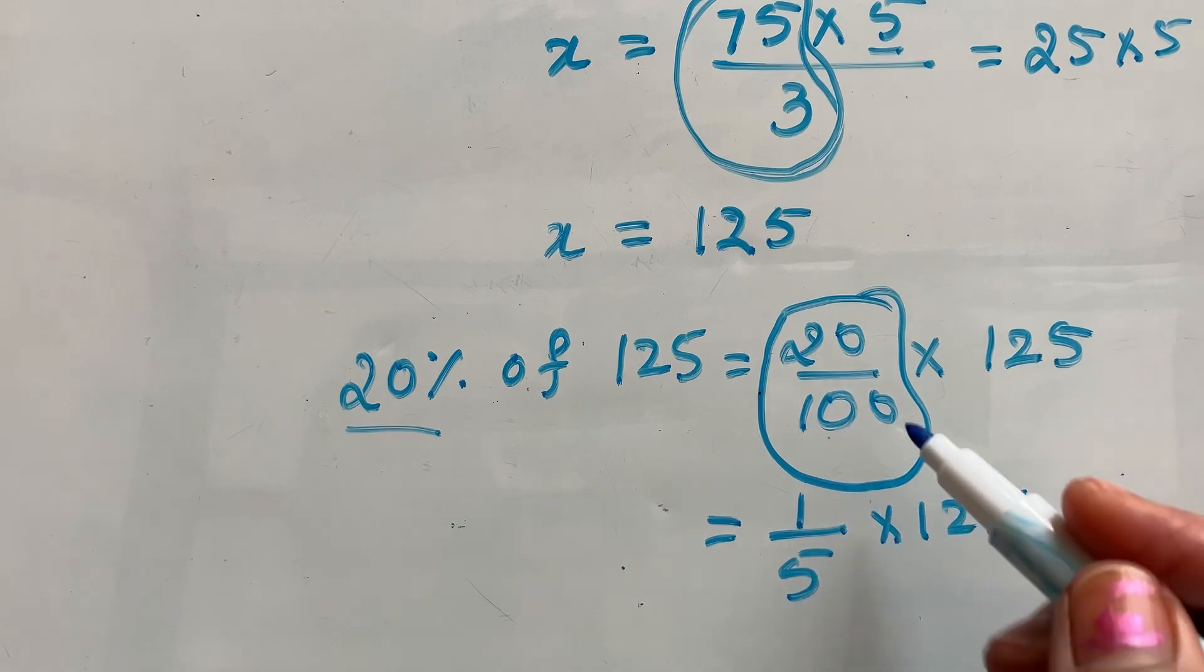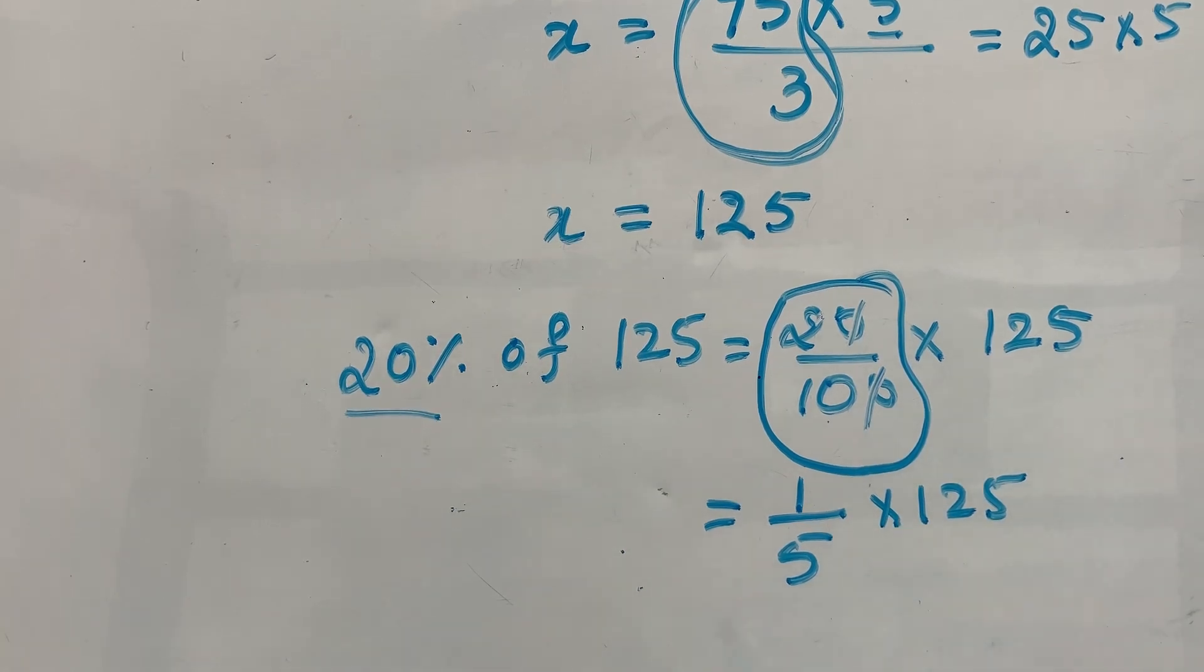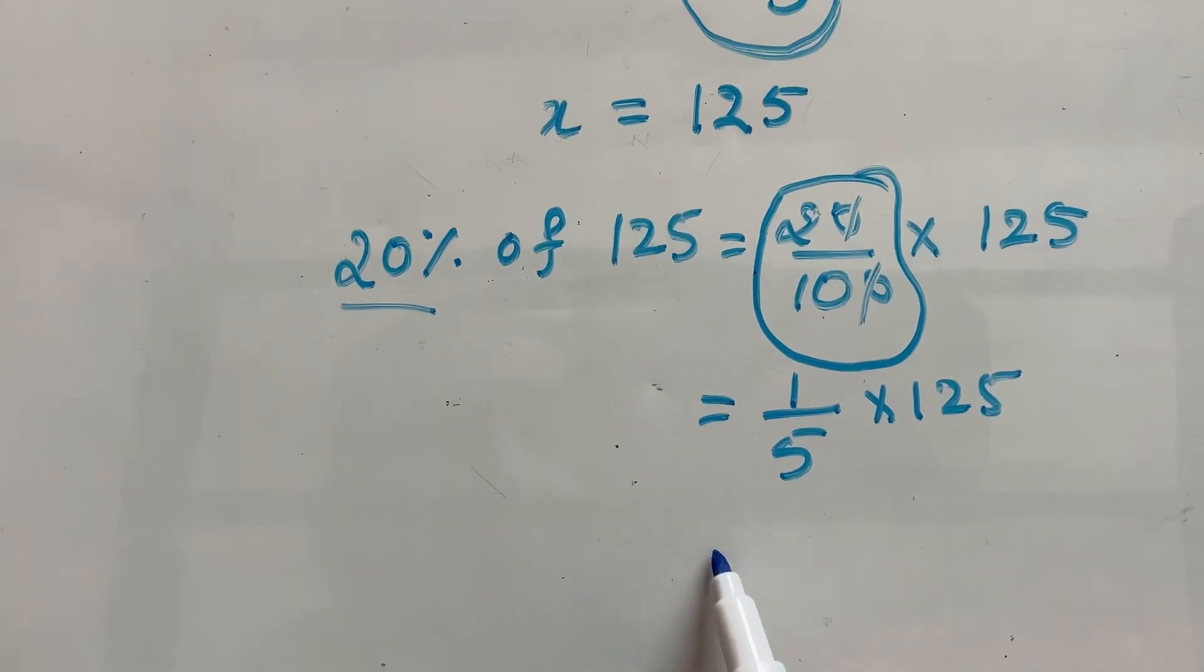Now, 20 over 100 is nothing but 1 fifth. 20 divided by 100, you just cancel out this 0 at the end. So 2 over 10. 2 over 10 is nothing but 1 fifth. 1 fifth of 125. That means 125 divided by 5, which is nothing but 25.